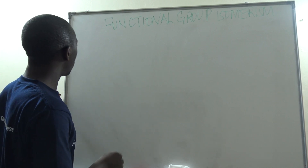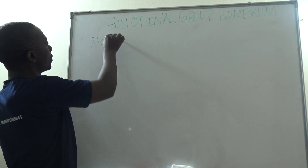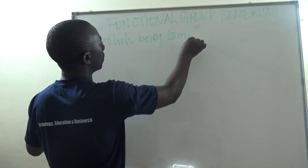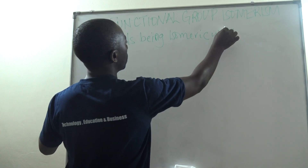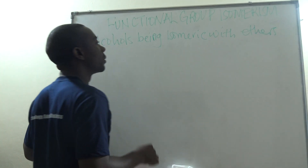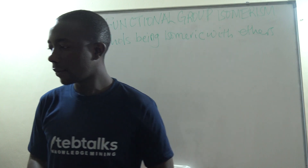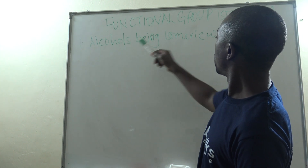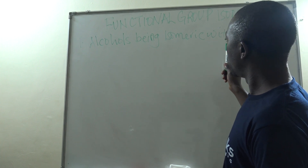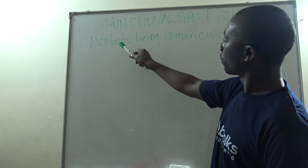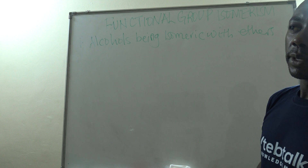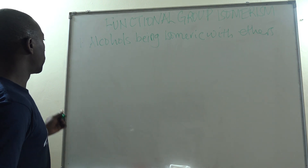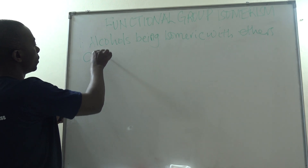We want to take an example of alcohols being isomeric with ethers. These alcohols are really isomeric with ethers in the sense that one isomer can be an alcohol and another isomer can be an ether. The difference between the two is that once the functional group changes from alcohols to ethers, the chemical properties of the two compounds also change — they become different compounds.